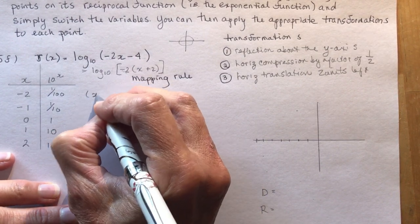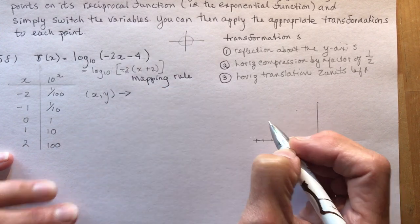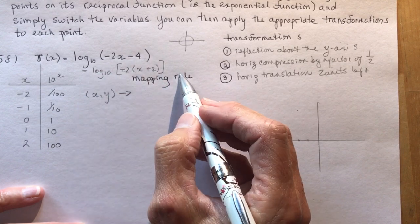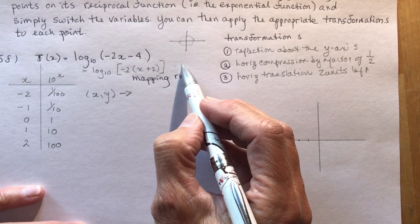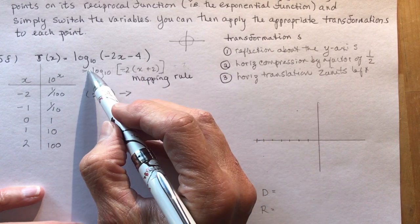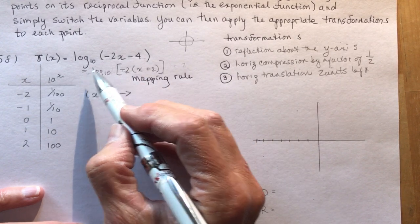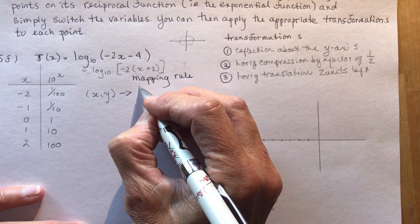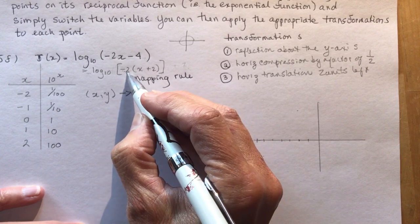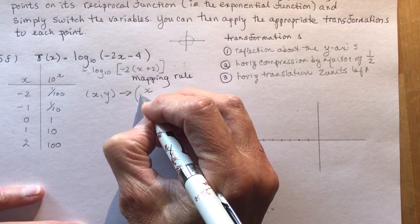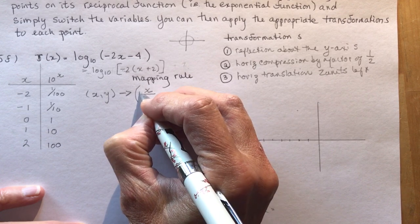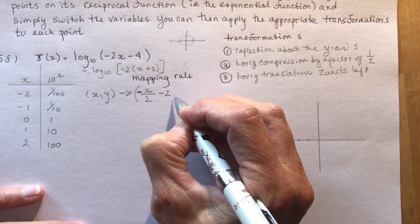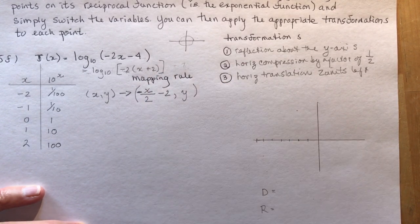So let's state what the mapping rule is going to be. What do I do to each of my values, X and Y? So nothing happens to the Y. We don't have anything out here. If I had a plus 1, I'd say Y plus 1. Or if I had a 2 out front of the logarithm here, I'd be 2Y plus 2, something like that. But nothing happens to the Y. So I don't have to worry about the Y's, only the X's. So the X is going to be divided by 2 and negative. So I have negative 1 over K, and then minus 2, and I do nothing to whatever the Y values are.